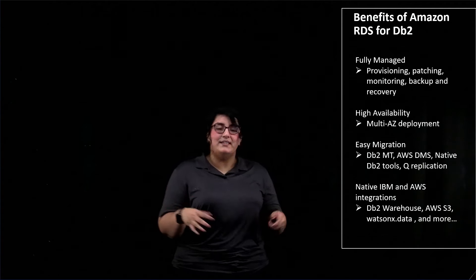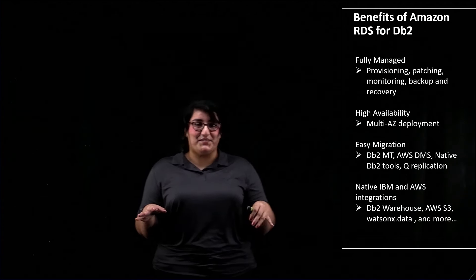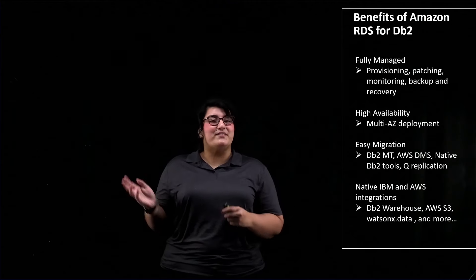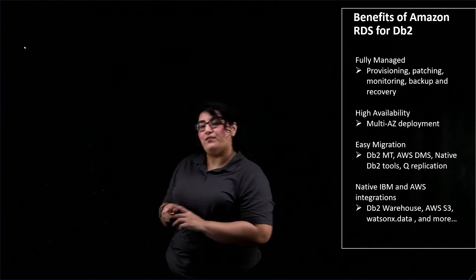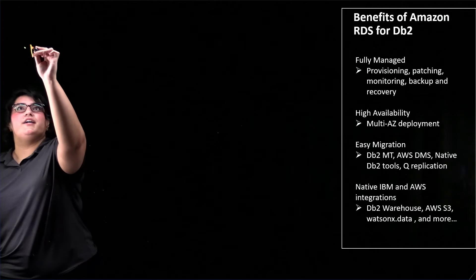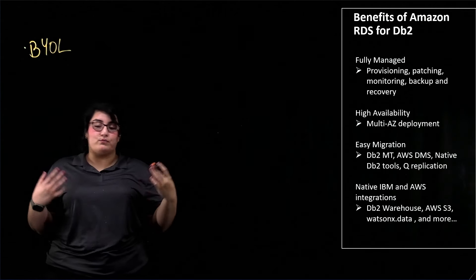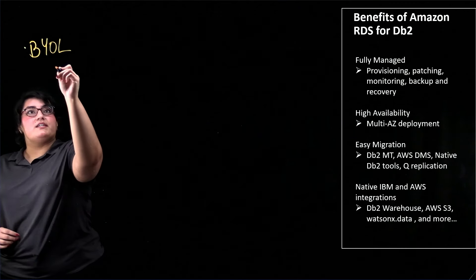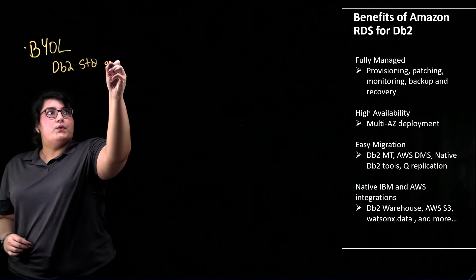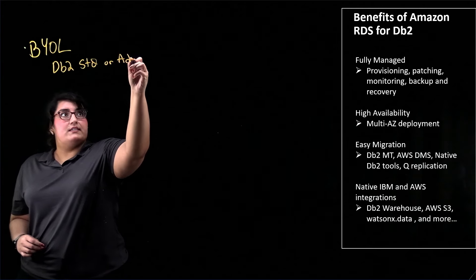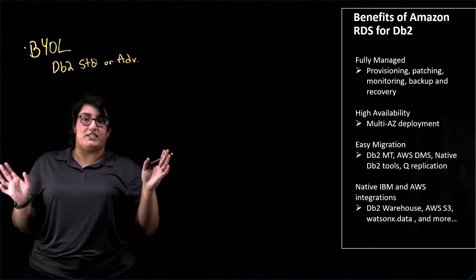So now, you're probably wondering, how do I get my hands on Amazon RDS for DB2? Let's move into our licensing options. The first option is the BYOL option, which stands for Bring Your Own License. You can bring your existing DB2 standard or DB2 advanced edition license over to Amazon to get started on your RDS for DB2 instance.